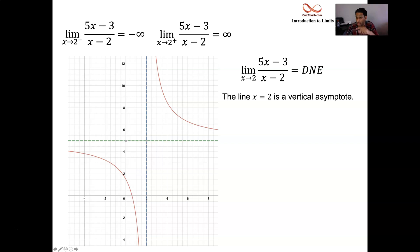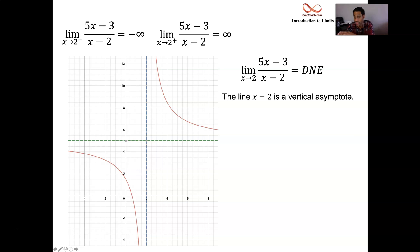The vertical line x equals 2 is the asymptote. There's another asymptote this function has: y equals 5. We'll find that out later by looking at limits at infinity. As x approaches infinity, this function approaches 5, and as x approaches negative infinity, this function also approaches 5.